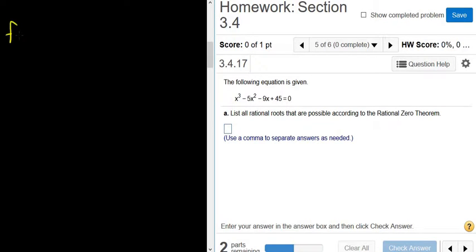So factors of 45. It's the factors of the constant term over the factors of the leading coefficient. So there's a 1 here in front of the x cubed, so factors of 1. So for the factors of 45, I'm going to draw a little picture to see if I can figure out what they are.